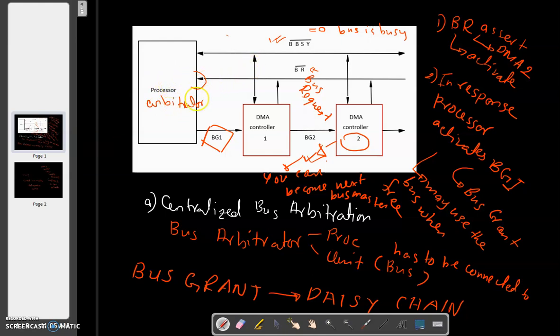This bus request line goes to the processor. The processor in response will generate a bus grant signal. What is the bus grant signal connected? Daisy chain fashion. Bus grant signal will first come to DMA controller 1. Did DMA controller 1 request to become the bus master? No.